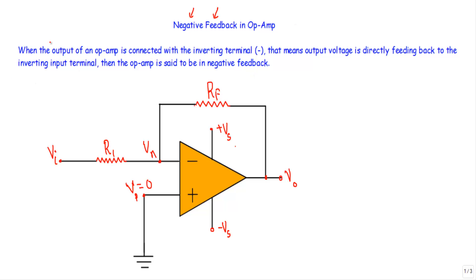When the output terminal of the op-amp is connected with the inverting or negative terminal of the op-amp, we say that the op-amp is in negative feedback.